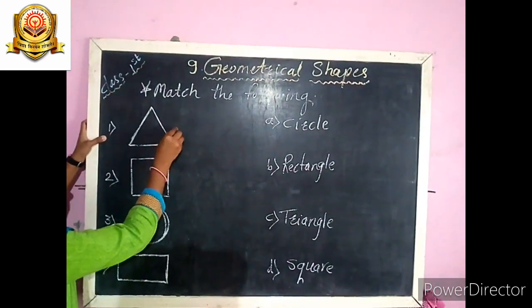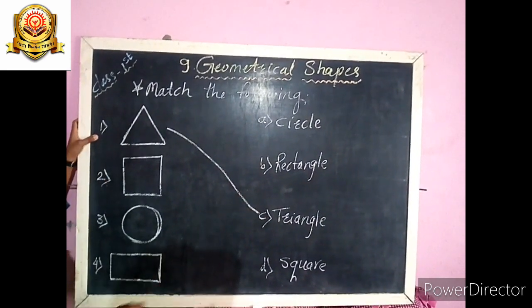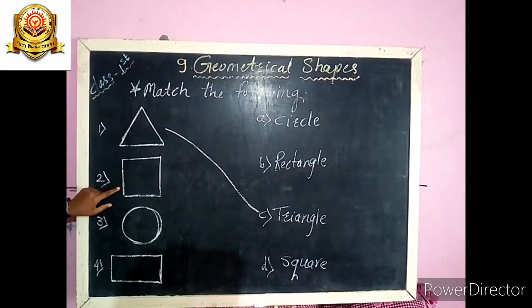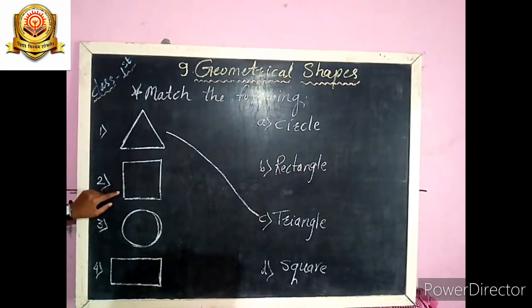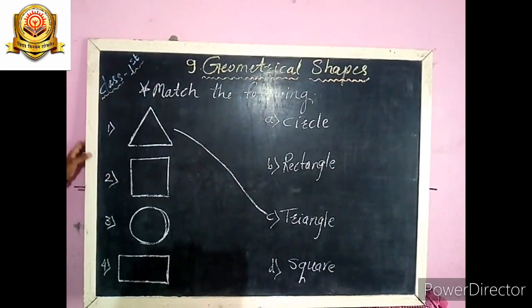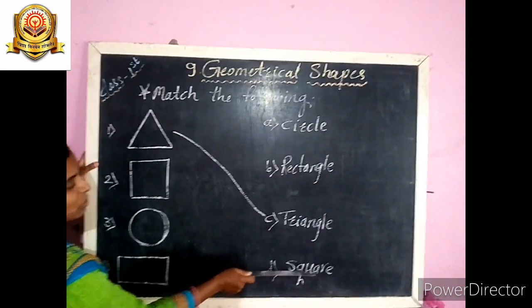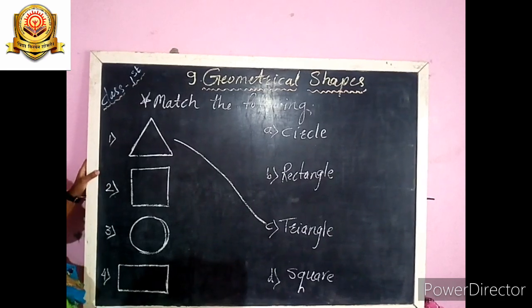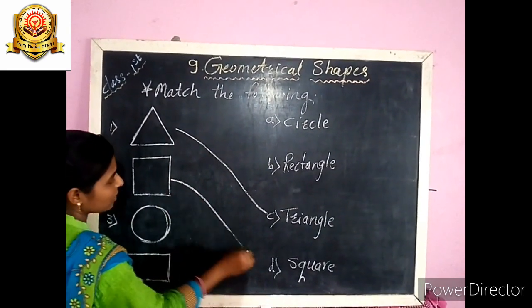Second shape — which is this shape? This is a square. Where is the spelling of square? S-Q-U-A-R-E — square. Match the shape with its spelling.